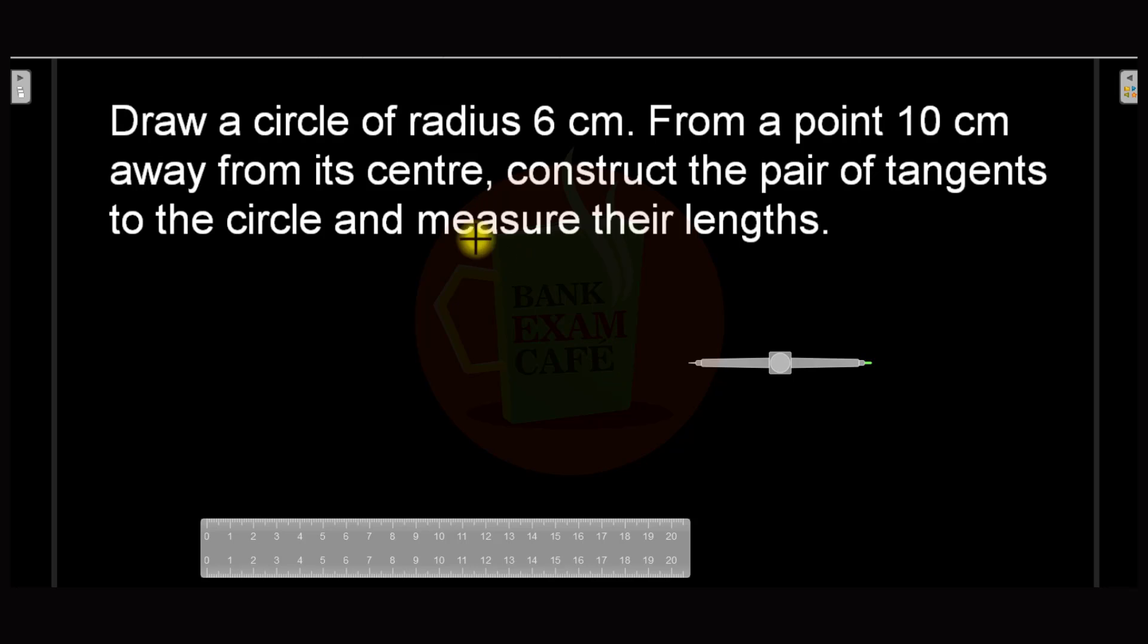So friends, here is the first question on the screen. Draw a circle of radius 6 cm. From a point 10 cm away from its center, construct the pair of tangents to the circle and measure their lengths.